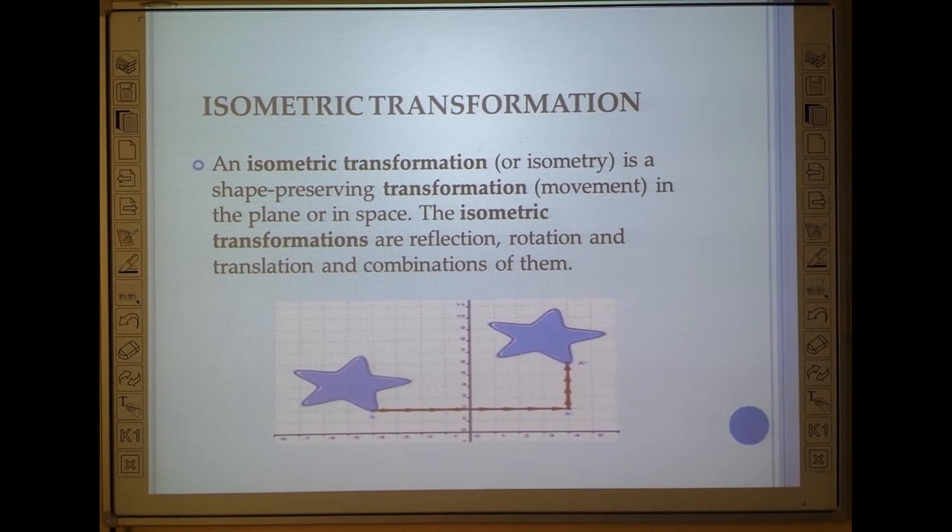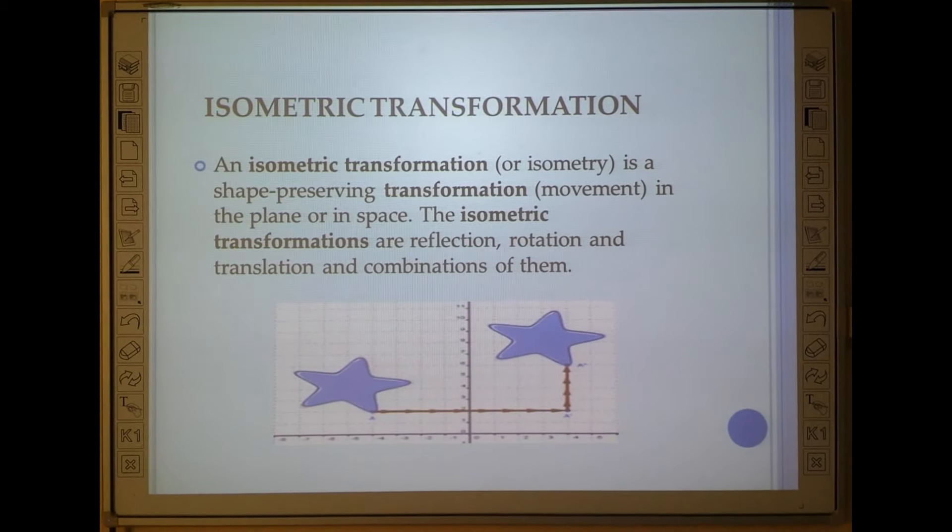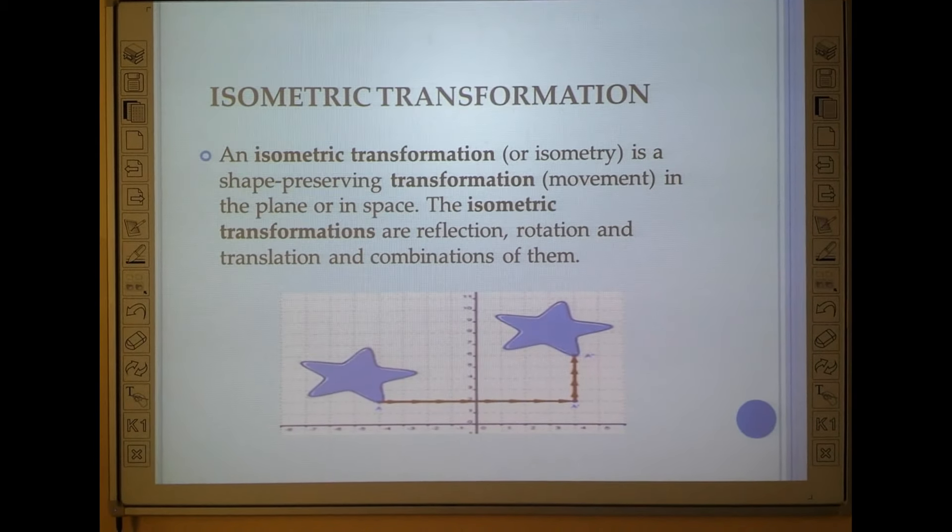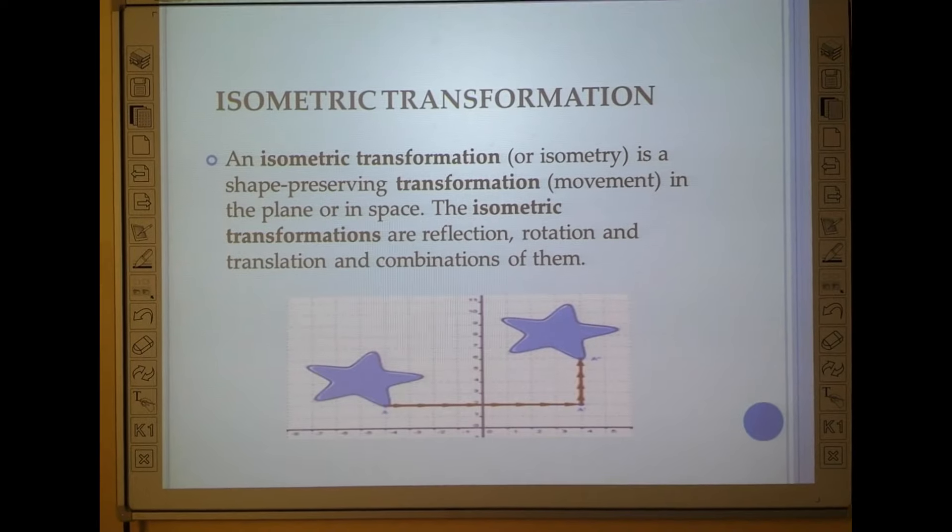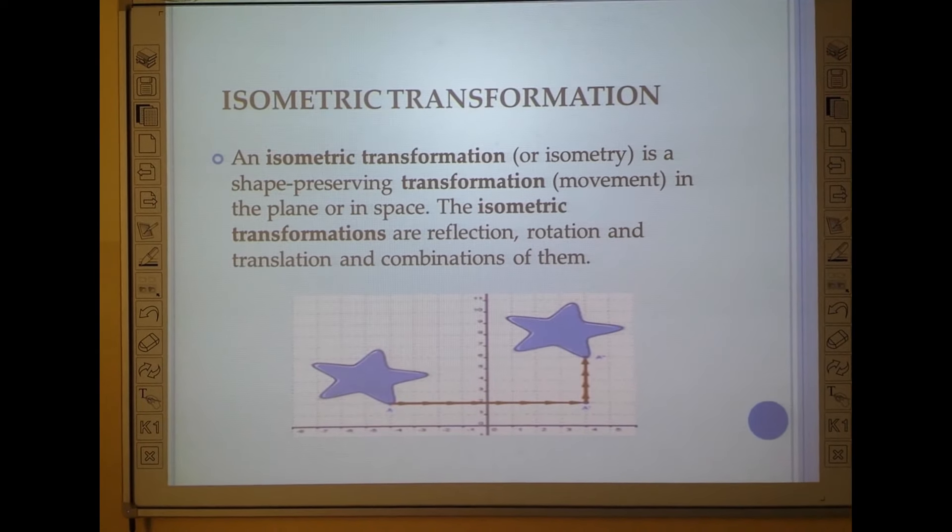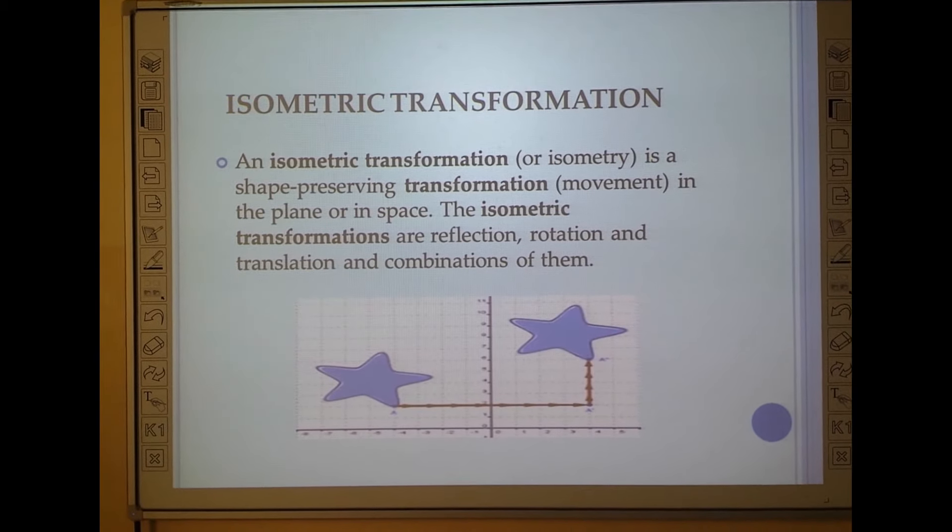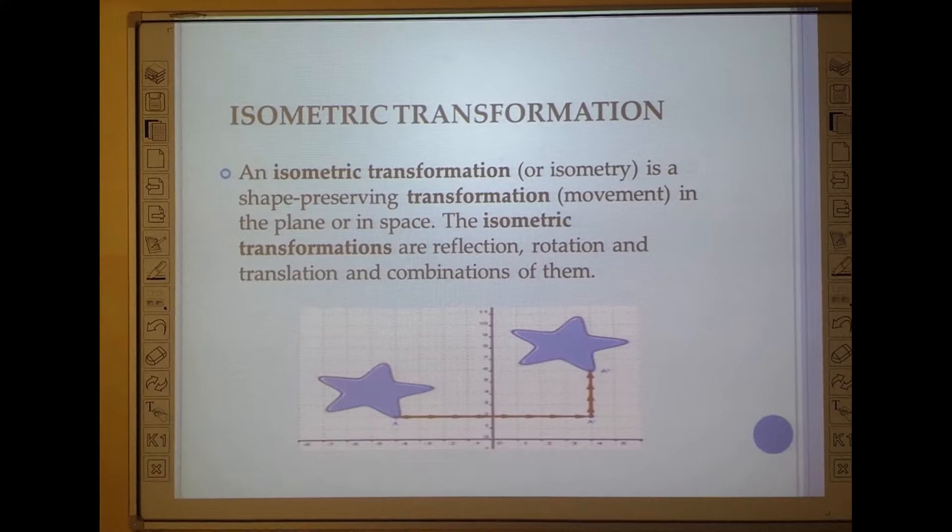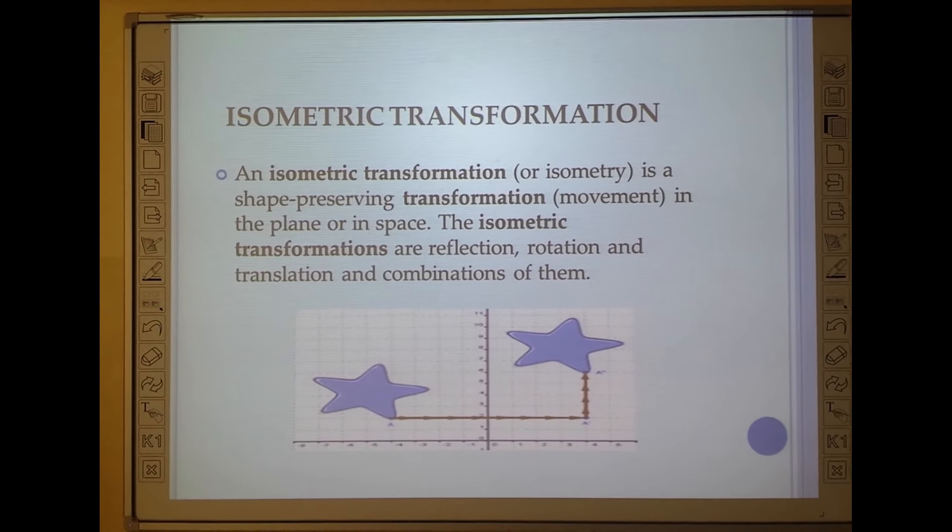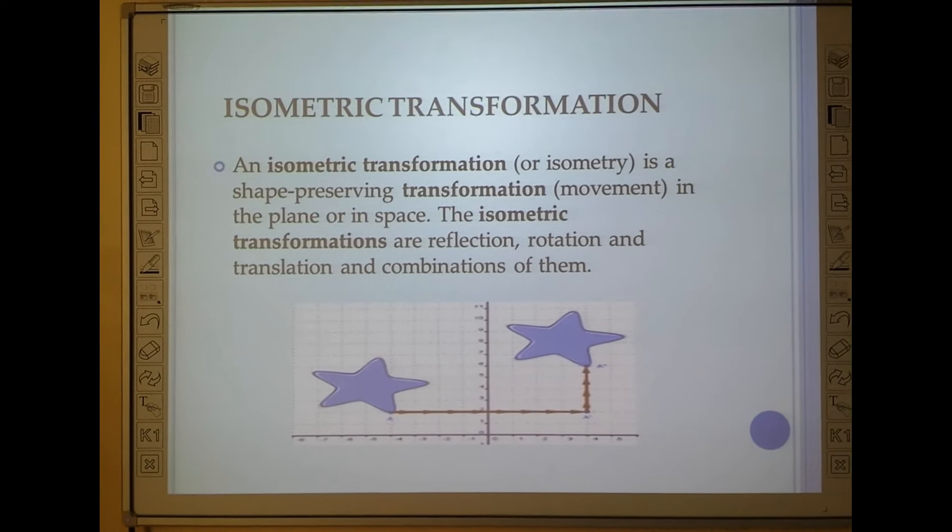First is isometric transformation. The word isometric comes from a Greek word and its meaning is having equal measurement. It means when an object mapped onto an image, the measurements would not be changed. In isometric transformation, the shape is preserved; only the movement takes place.